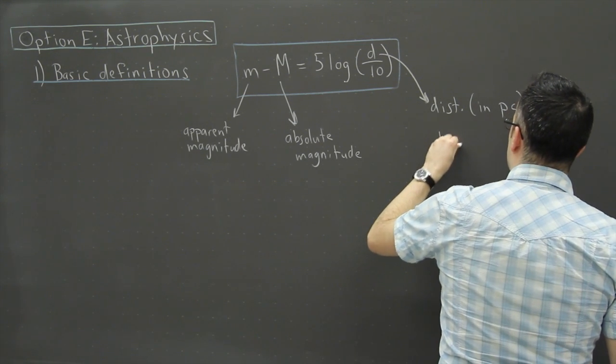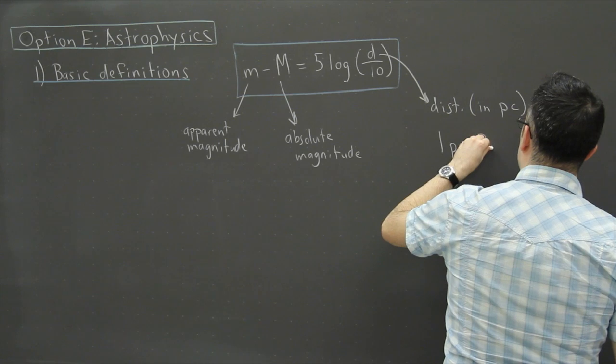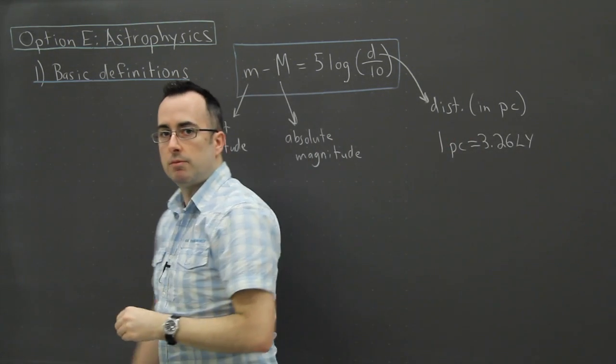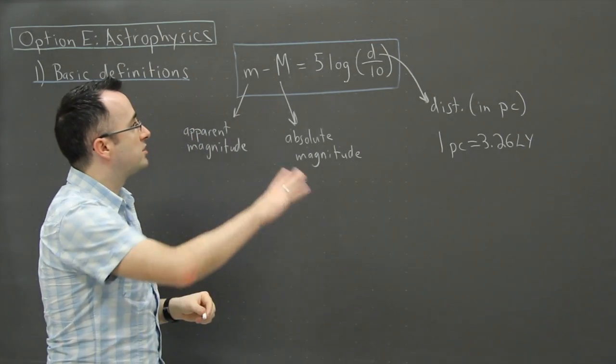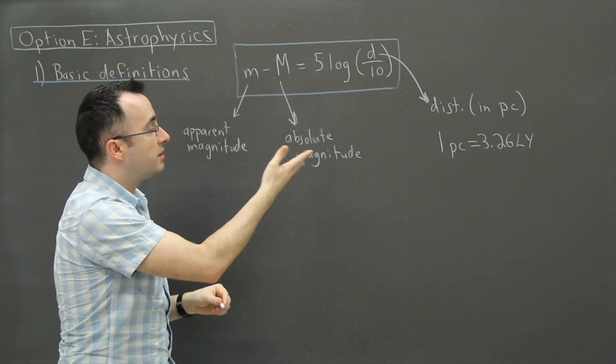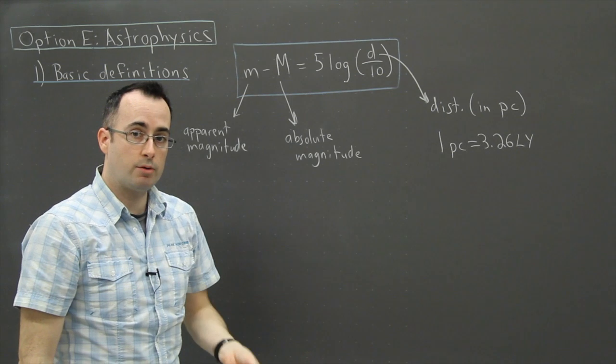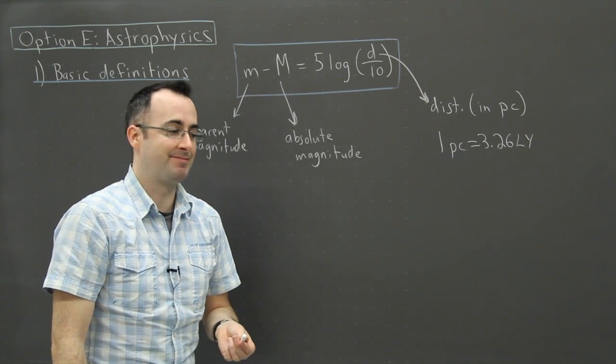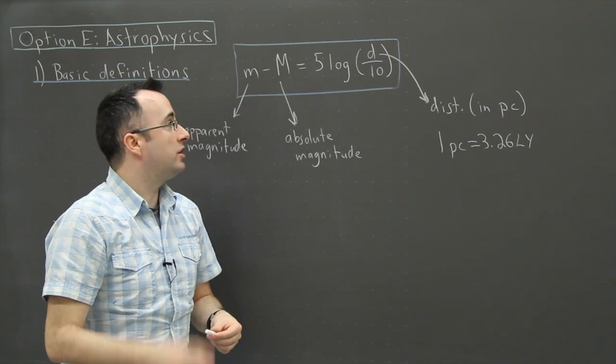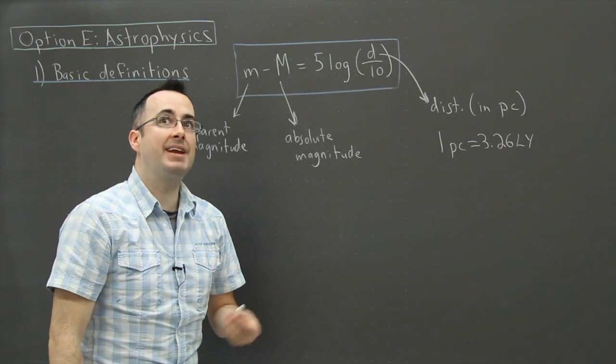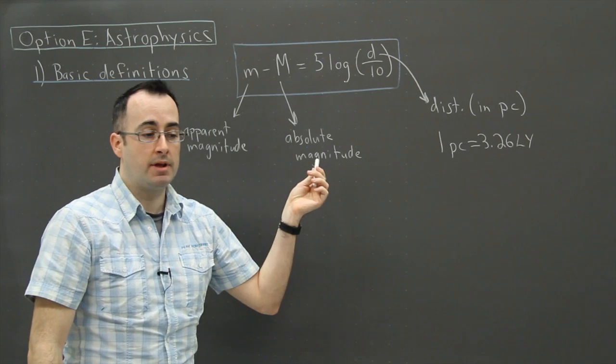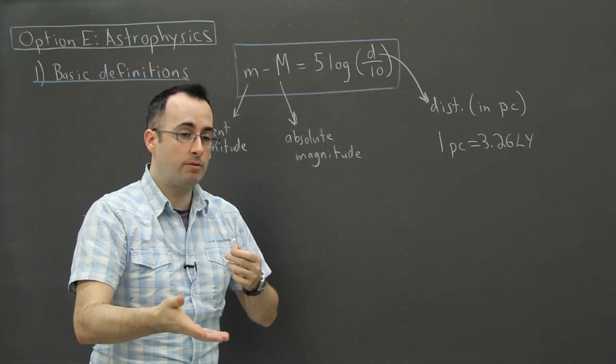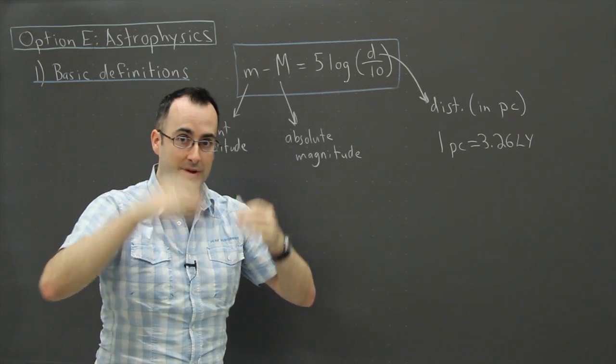Now one parsec equals 3.26 light years. I'll be explaining a little bit more about parsecs, but for right now I just want you to understand at least that there is another version, another scale that we can use. And I personally hate this one. I think it's kind of stupid. They do want you to learn it, and this is more of an antiquated scale. I just mean that for students to learn about it, I don't know why we have to learn two different versions, but so be it.